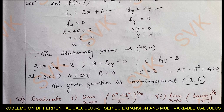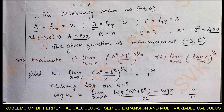Moving on to question 4a: evaluate the limit as x → 0 of ((aˣ + bˣ)/2)^(1/x), and also the limit as x → 0 of (tan x / x)^(1/x). For the first problem, name the limit as k. As x → 0, aˣ → 1 and bˣ → 1, so the base (1+1)/2 = 1, and the exponent 1/x → ∞. We get the indeterminate form 1^∞.